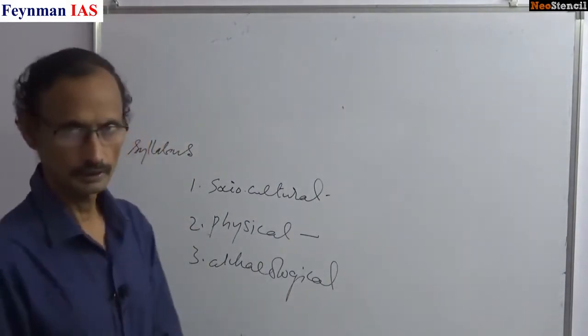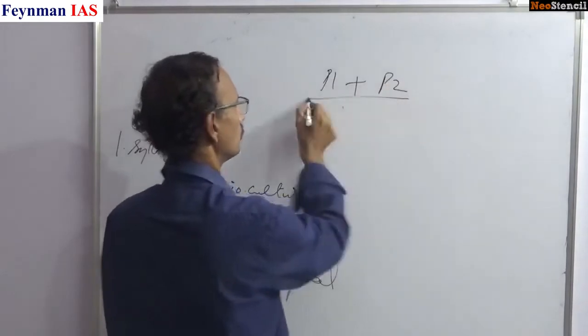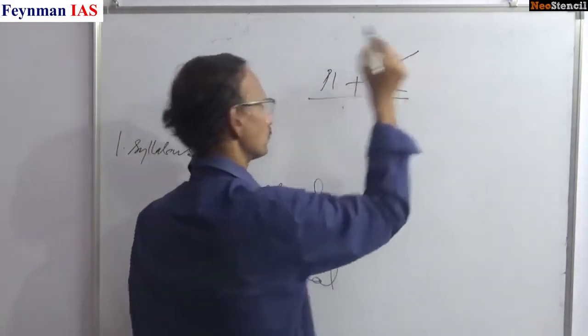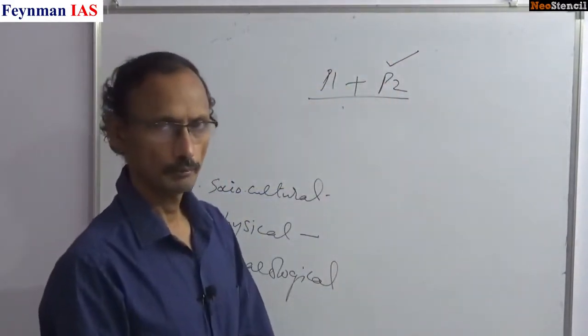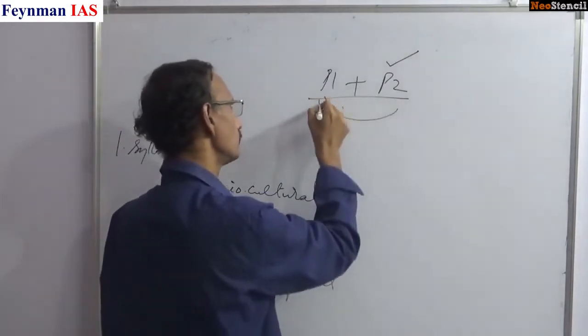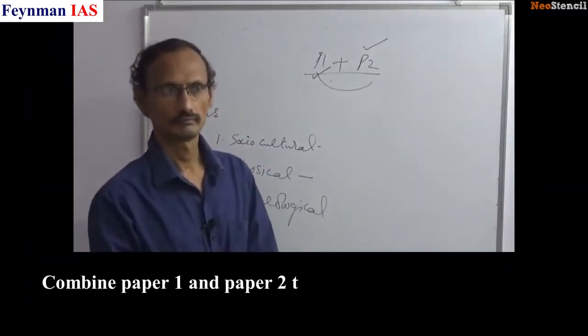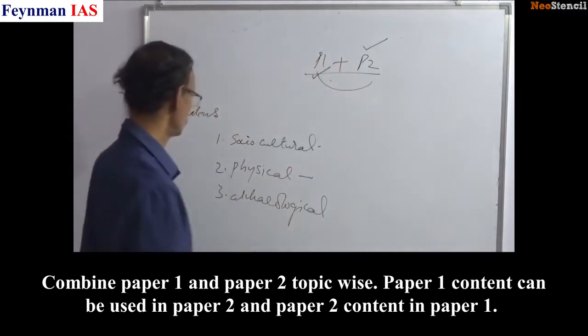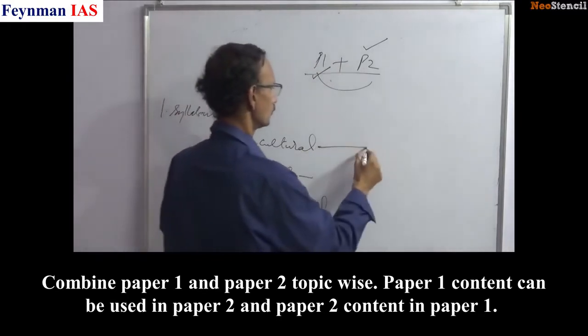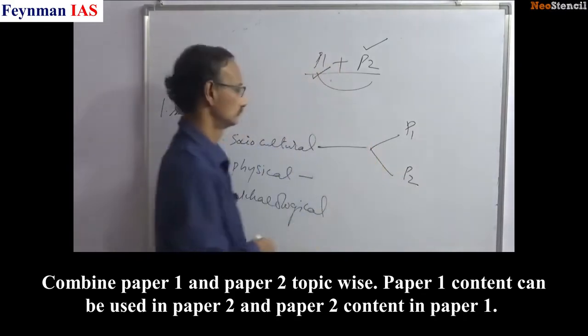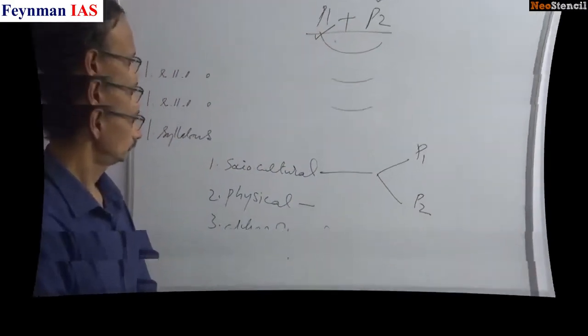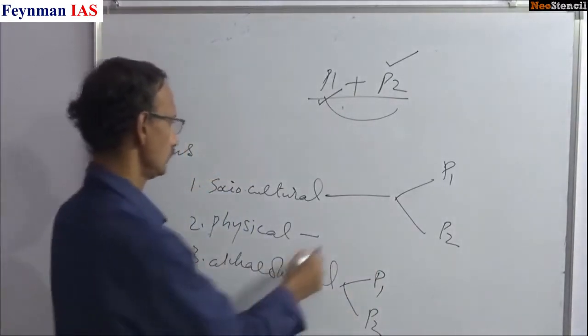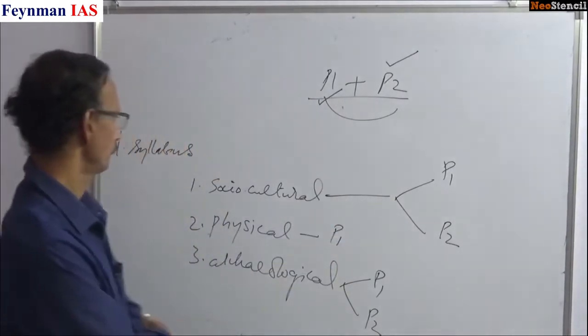Next important thing is combine paper 1 and paper 2. Knowledge of paper 1 to be used in paper 2, and paper 2, which specializes in India, can be used as an example in paper 1. Don't divide into paper 1 and paper 2 artificially. Mix. It helps. Socio-cultural can be divided into paper 1 and paper 2, archaeological also, physical also. Combine.